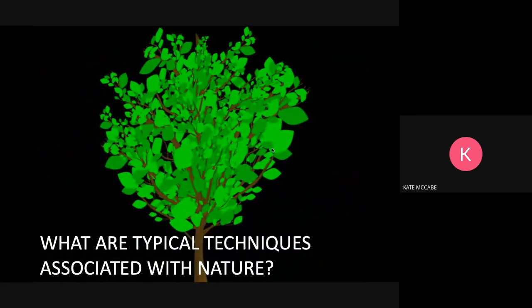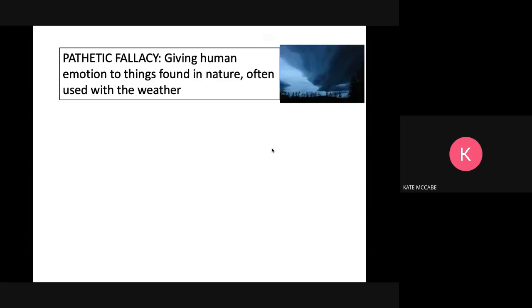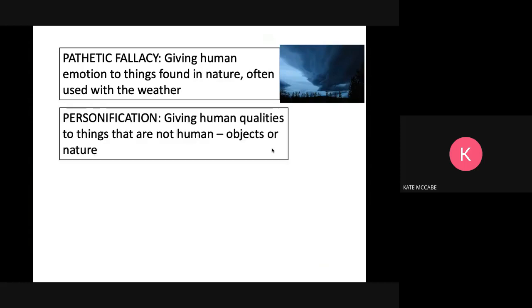So what are the typical techniques associated with nature? We have pathetic fallacy — giving human emotion to things found in nature, often used with the weather. For example, we could talk about dark clouds gathering if the character was also feeling angry or frustrated. We have personification, which is giving human qualities to things that are not human, such as objects or nature. So we could say that the moon gazed upon the world below.